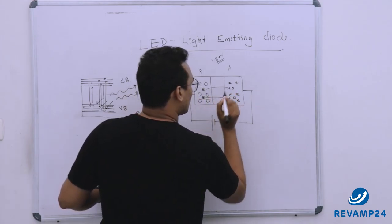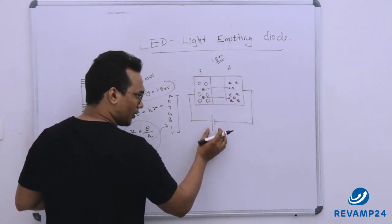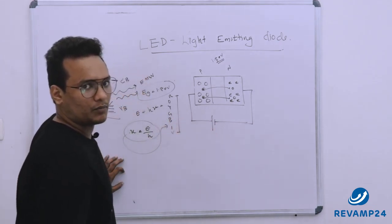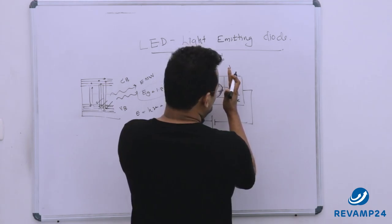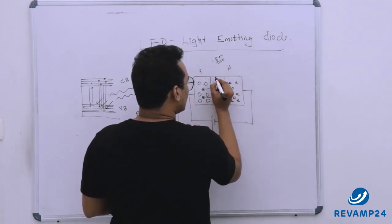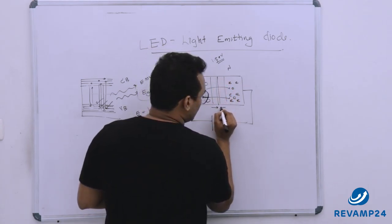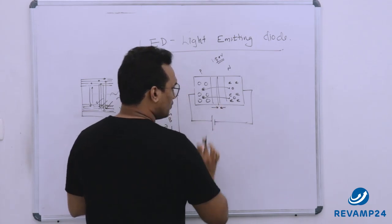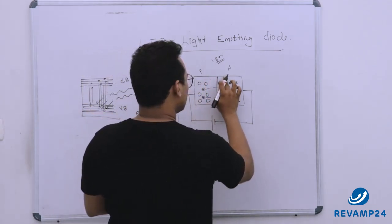Okay now we need the electron to recombine with hole. For that what we will do? We will provide an external potential difference. Now this potential difference will shrink the potential barriers. So potential barrier will shrink and the thickness will come to a value such a way that there won't be any depletion region.